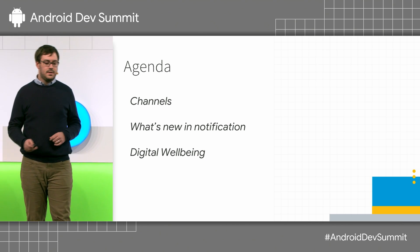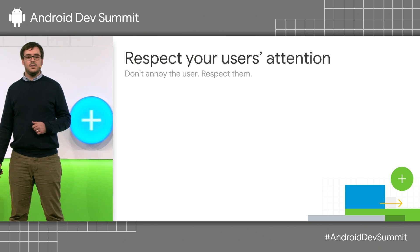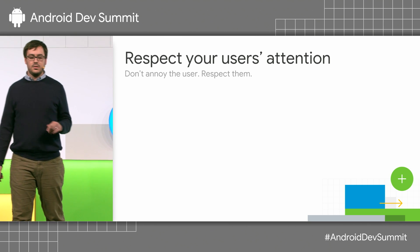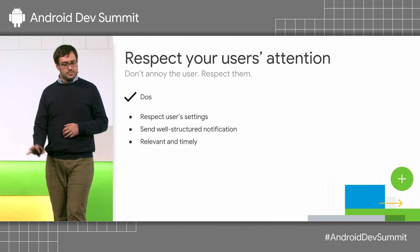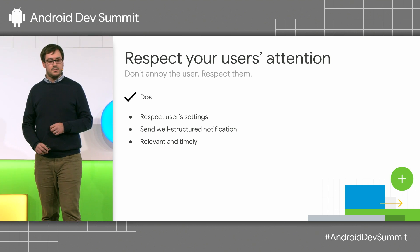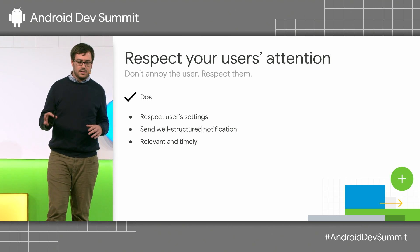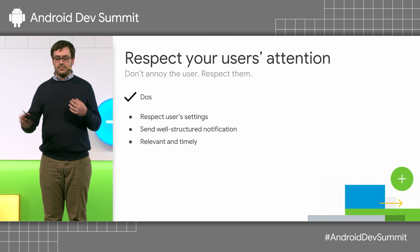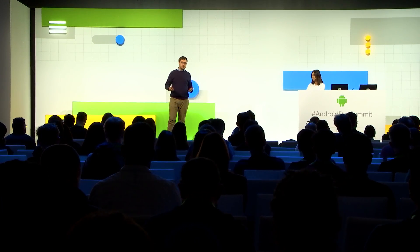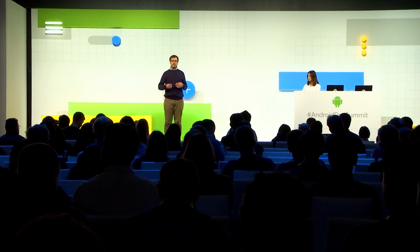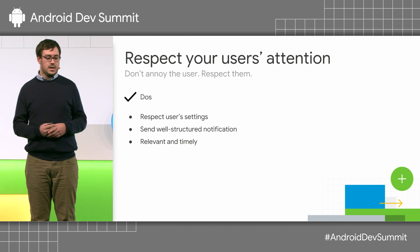First, how to respect your users. Respect your users' attention. Don't annoy the user. Respect them. Some useful tips: respect the user's settings. If they've communicated to you in your app that they want a certain setting for your notifications, then you should respect that. Don't try and override it. You should check that the notifications you're sending are not blocked, that they do still want to hear these notifications.